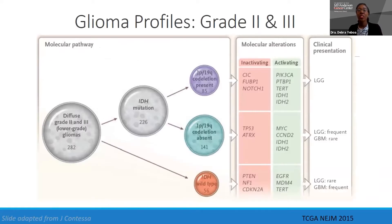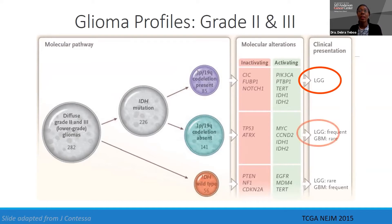For low-grade gliomas, just as Dr. Hughes had mentioned, we have now started to think of them in different buckets, more based on molecular features. Based on the New England Journal of Medicine presentation, the IDH mutant patients that are 1p19q co-deleted are considered oligodendrogliomas in true low grades. Those that are IDH mutant even without 1p19q co-deletion are also considered low-grades. But we are no longer thinking about IDH wild types as our historical consideration for grade 2s and grade 3s.